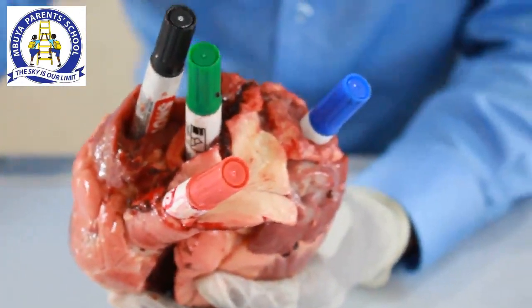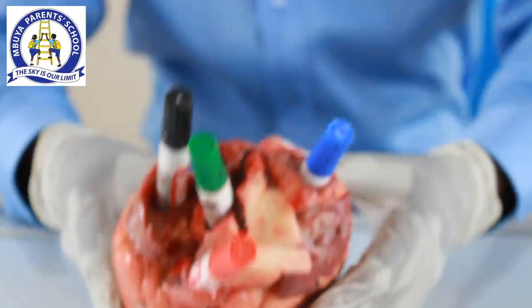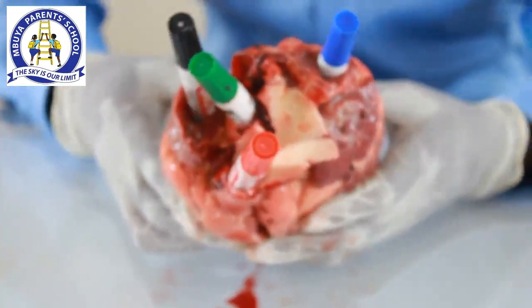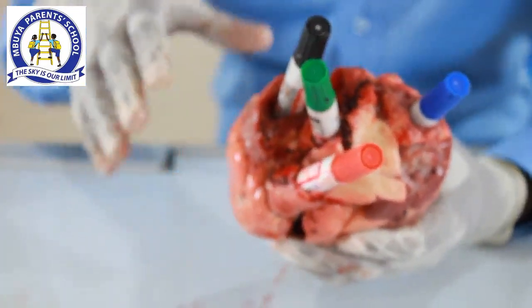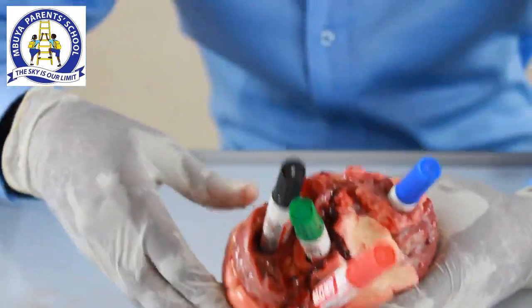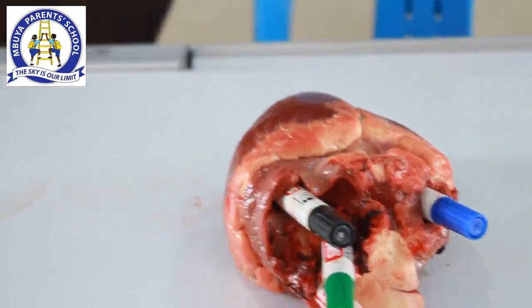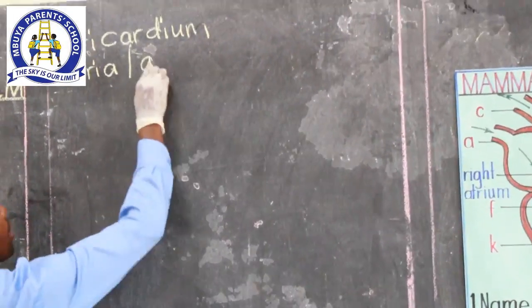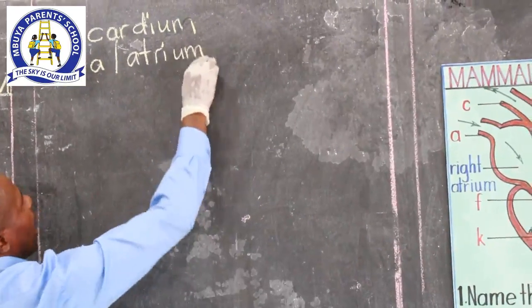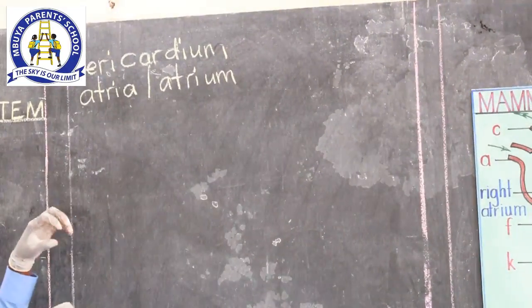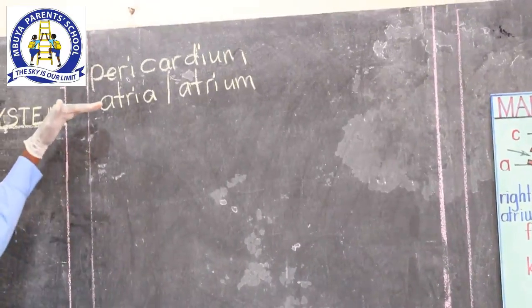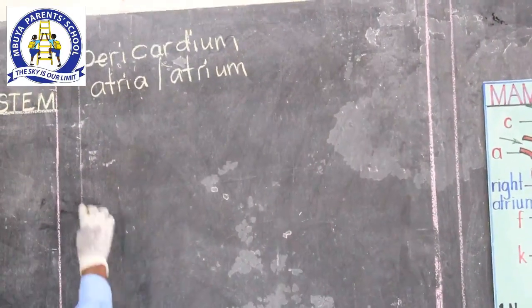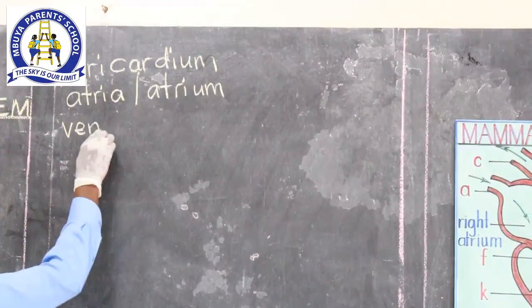Our heart is made up of four chambers — two upper chambers and two lower chambers. The two upper chambers are called atria, which is plural, or atrium when singular. They are also called auricles. In the lower, we have the ventricles.